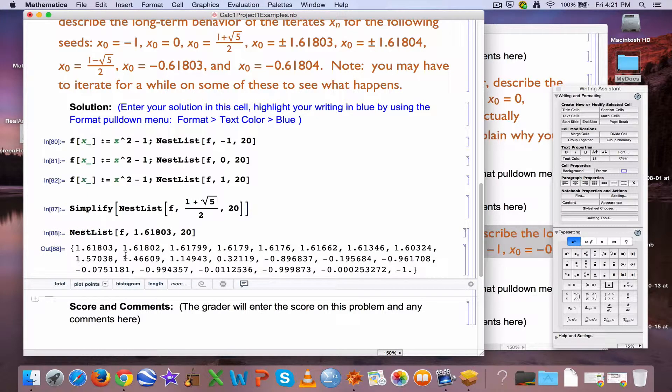change this to 1.61803, an approximation for (1 + √5)/2. What happens? Hmm, something different. It doesn't stay fixed. The points move away from (1 + √5)/2 evidently.